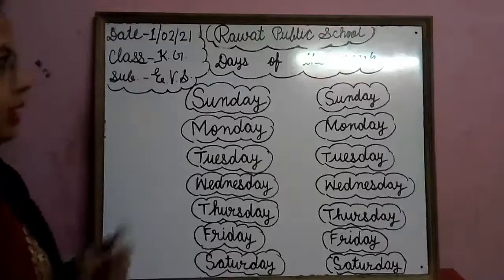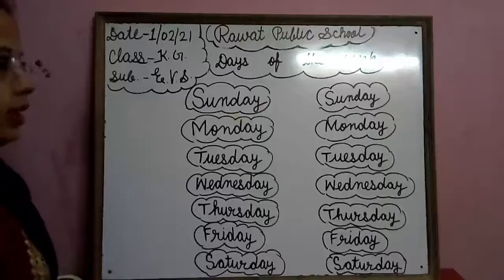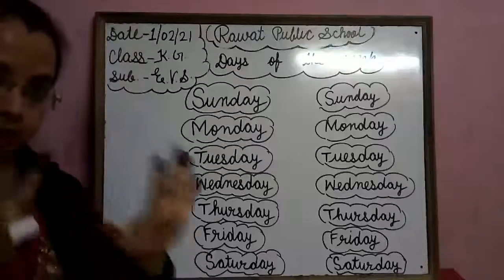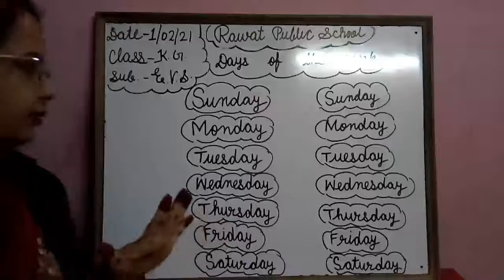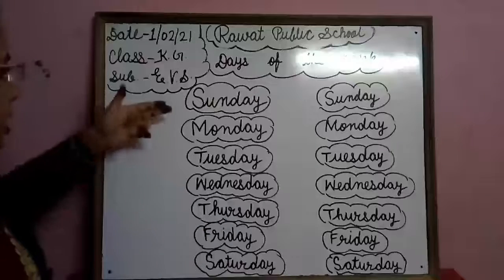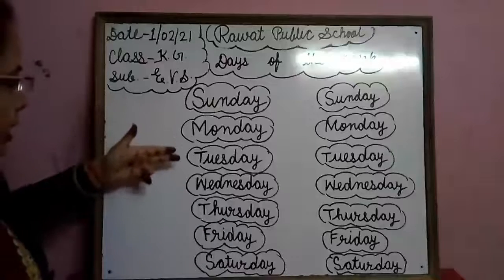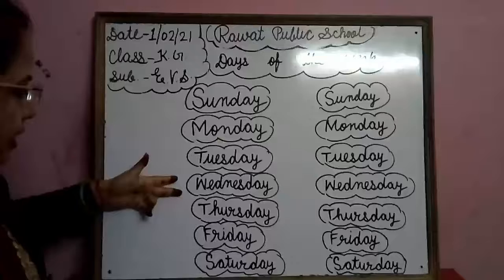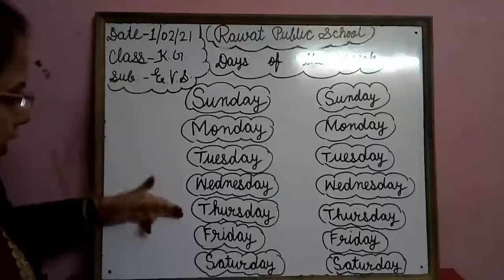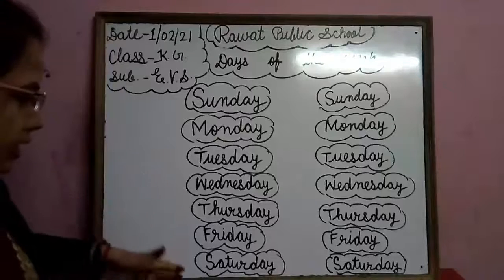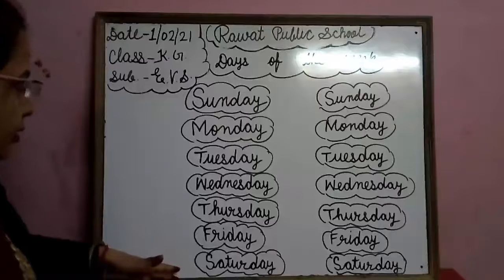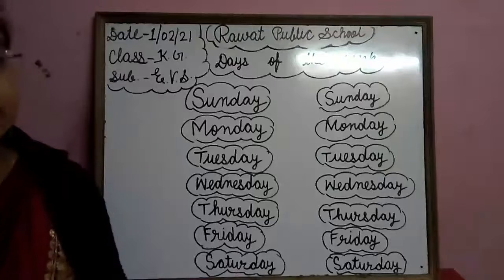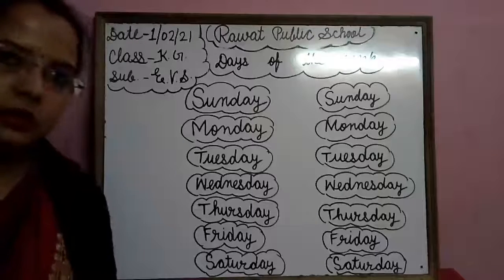How many days in a week? There are 7 days in a week. Sunday, Monday, Tuesday. Jaldi se aa — Wednesday. Thursday, Friday, Saturday. So children, please learn the week's days. Thank you.